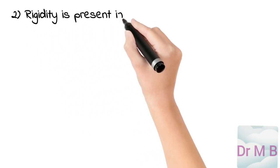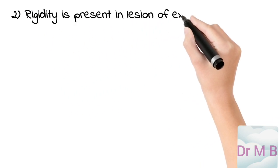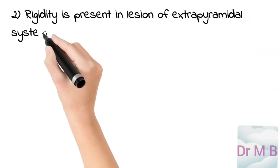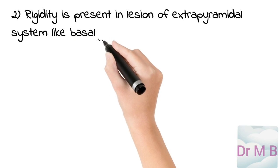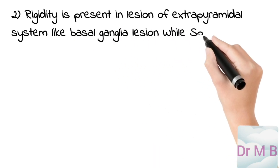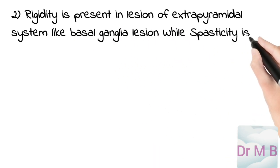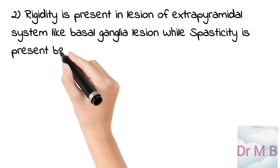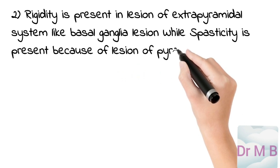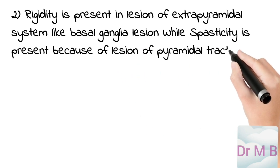Rigidity is present in lesion of the extrapyramidal system, like basal ganglia lesion, while spasticity is present because of lesion of the pyramidal tract, that is the corticospinal tract.